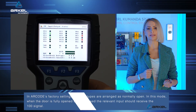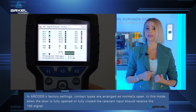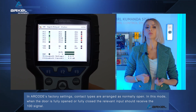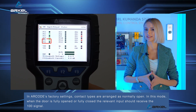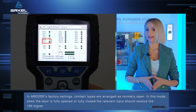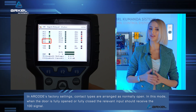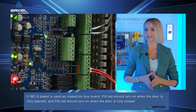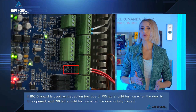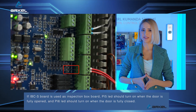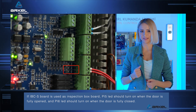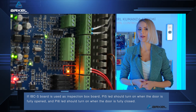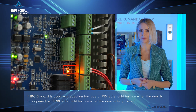In ARCODE's factory settings, contact types are arranged as normally open. In this mode, when the door is fully opened or fully closed, the relevant input should receive the 100 signal. If the IBCS board is used as inspection box board, the PI5 LED should turn on when the door is fully opened, and the PI6 LED should turn on when the door is fully closed.